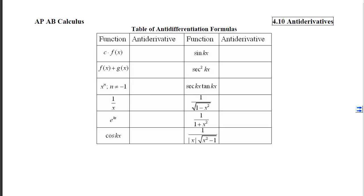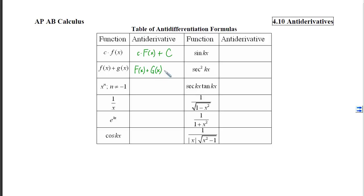As we do antiderivatives, we need to think about how we go backwards. What did we differentiate to get little c times little f of x? That would be little c times the antiderivative capital F of x plus some constant. What did we differentiate to get little f plus little g? That would be capital F plus capital G plus an arbitrary constant.